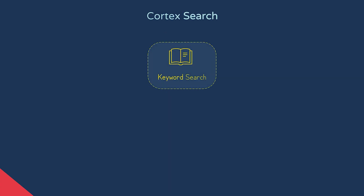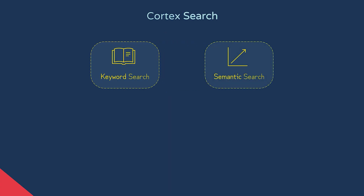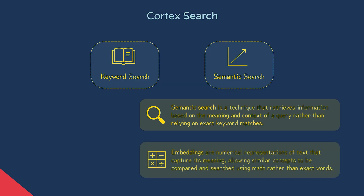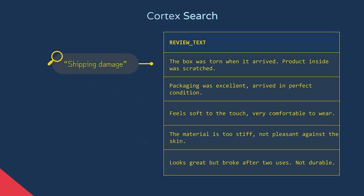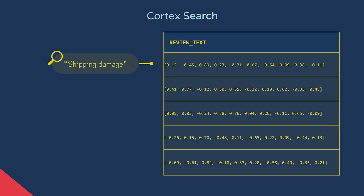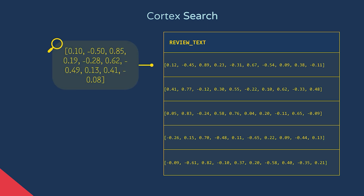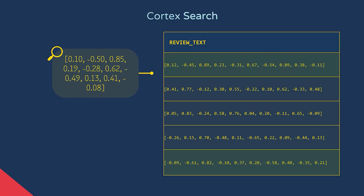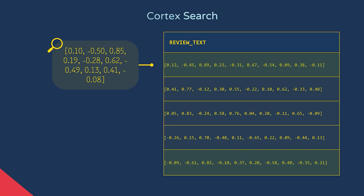Not only does Cortex Search use keyword search, it also uses semantic search — looking at the meaning of your search query, not just the specific words. To do this, it uses something called embeddings: numeric representations of text which can be compared and searched using maths rather than exact words. Imagine turning each review into a set of numbers — a vector — that captures its meaning, and the same goes for your search query. These vectors are then compared using vector search. If two pieces of text have similar meanings, their vectors will be close together, so Cortex Search can still return those results even if the words aren't the same. This is often referred to as a type of fuzzy search, but it's more advanced because it's based on context and meaning, not just partial word matches or typos.